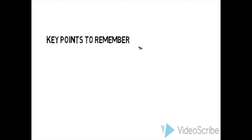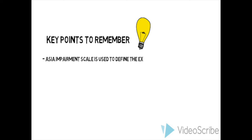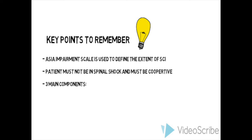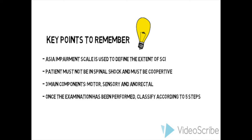Some key points to remember: the ASIA Impairment Scale is used to define the extent of spinal cord injury. Patients must not be in spinal shock and must be fully cooperative. There are three main components of the scale, and once the examination has been performed, classify the injury according to the five steps. Thanks for watching.